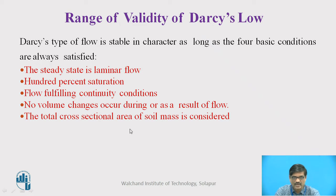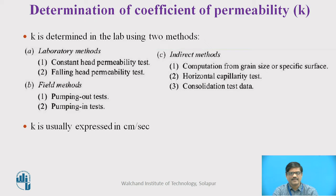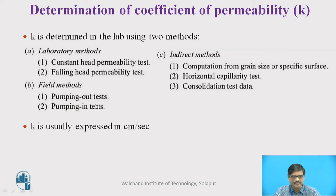Also, the cross-sectional area of the soil mass is considered. If all these conditions are satisfied, then Darcy's law is applicable. As far as the determination of coefficient of permeability is concerned, there are many methods available: laboratory methods include constant head permeability test and falling head permeability test. Field methods include pumping out test and pumping in test. Indirect methods include computations from grain size or specific surface, horizontal capillary test, and consolidation test data. The unit of coefficient of permeability is the unit of rate of flow — either centimeter per second or meter per second.